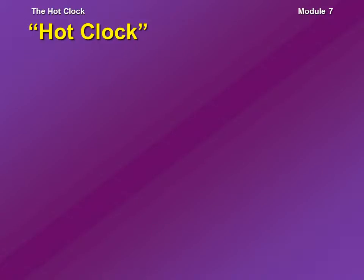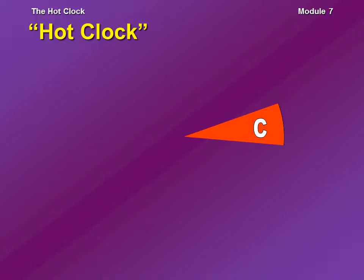Here's what we're going to do for our hot clock. Remember, it's a pie chart, so we start with individual slices of pie. Here's the first piece. It has the designation C for current. A current category song simply means it's a hit now. People like it now. It's relatively new.